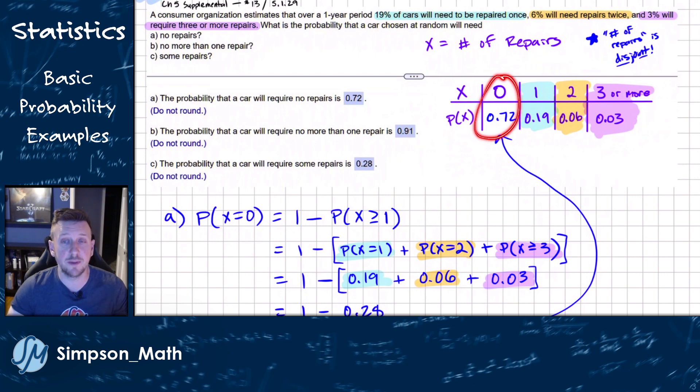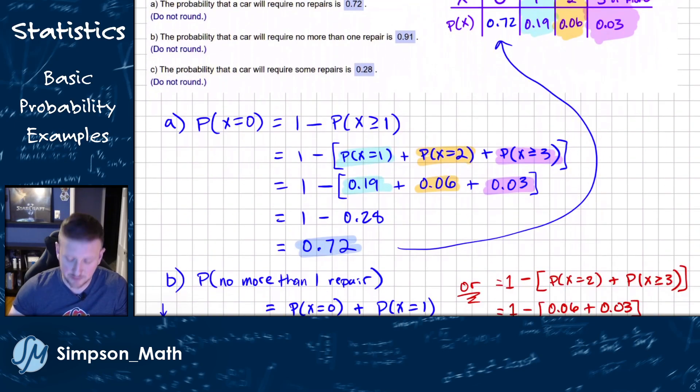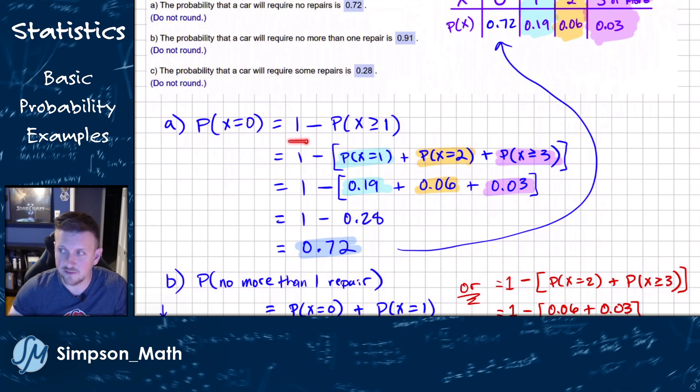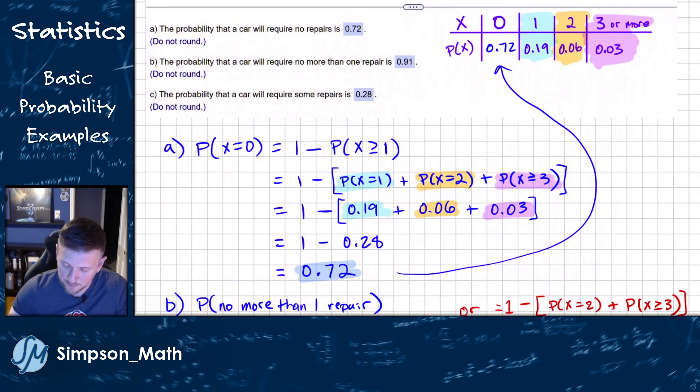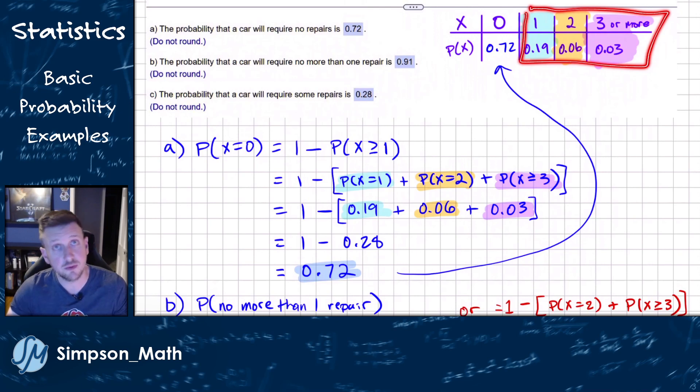So the first question is, what if there's no repairs? That would just be zero. Here I've defined my event with the variable x as my number of repairs. So then it could be zero repair, one repair, two repairs, or three or more. So if it's no repairs, based on the information given to me, I'm going to find out what's the probability of one, two, three or more, or basically one or more, and then subtract that from one.